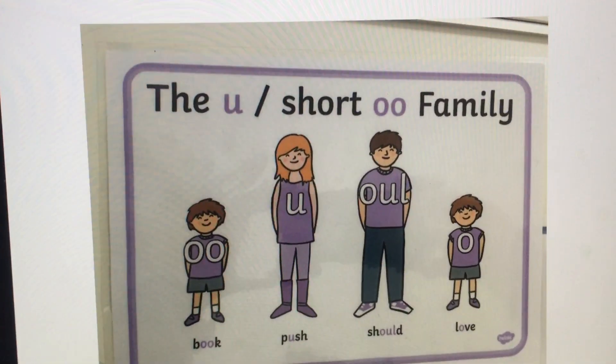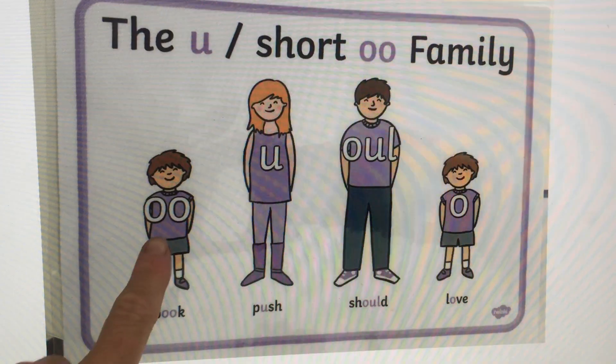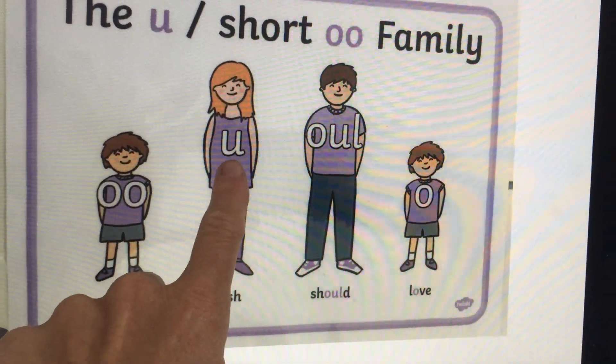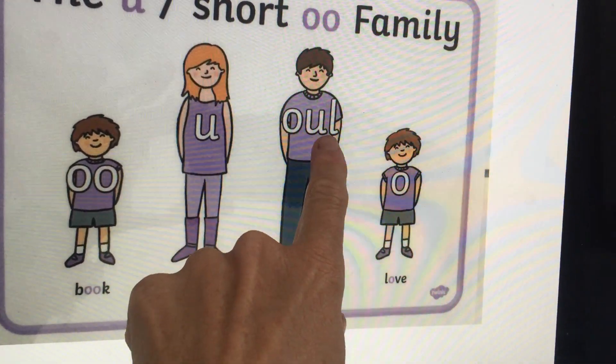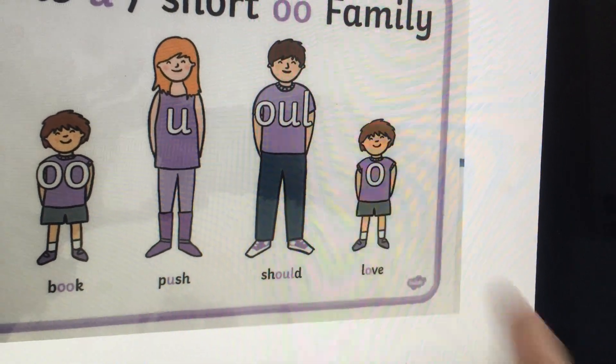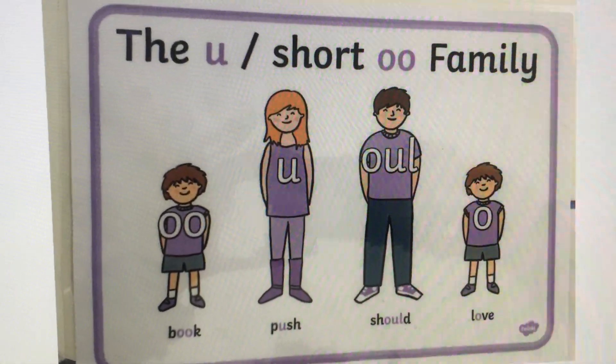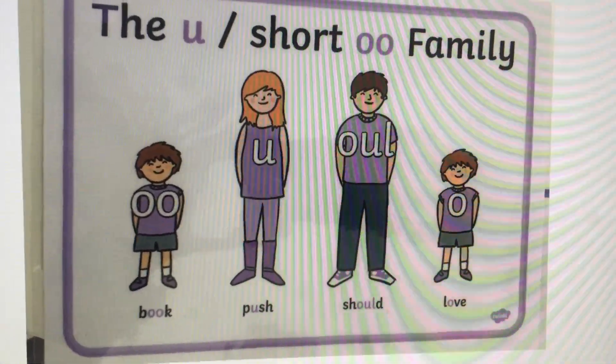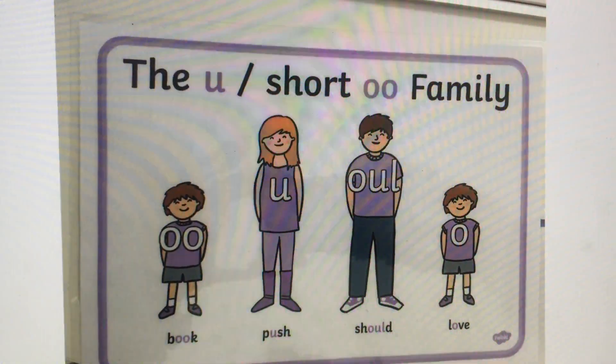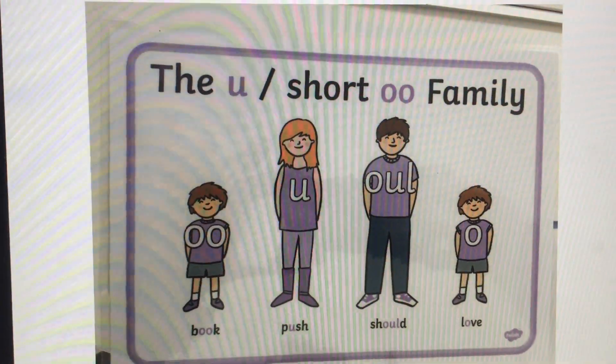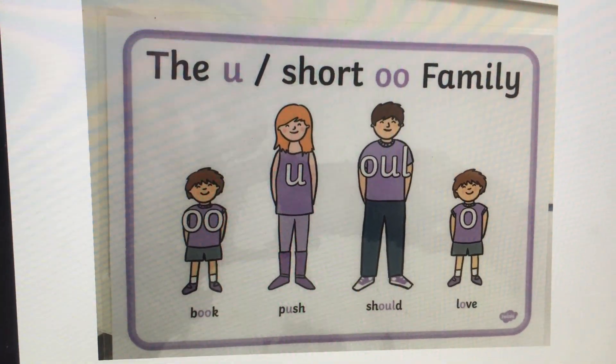And that is the U and the short U family: double O, U, O-U, all making the U sound, and the O making the U sound. Fantastic! That's this family done. Bye for now. Thanks for watching.